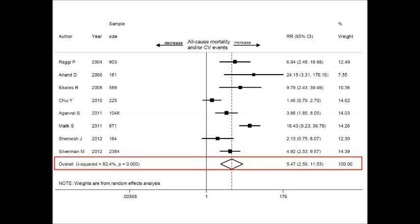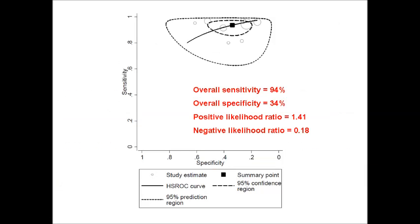Pooling the data of these 8 studies, we can see that patients with coronary artery calcium higher than 10 had increased risk for future events as compared to those with lower than 10. The relative risk was 5.4. This slide shows the predictive performance of coronary artery calcium score of 10.